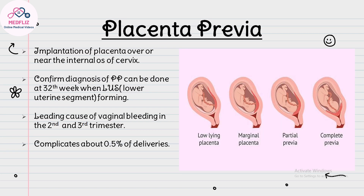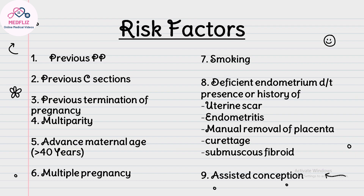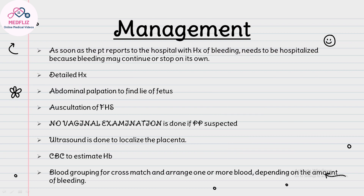Placenta previa is defined as implantation of the placenta over or near the internal os of the cervix. Confirmed diagnosis can be made at 32 weeks of gestation. It is a leading cause of vaginal bleeding in the second and third trimester, complicating about 0.5% of deliveries. Risk factors include previous placenta previa, previous cesarean sections, previous termination of pregnancy, multiparity, advanced maternal age over 40 years, multiple pregnancies, smoking, and deficient endometrium due to uterine scar, endometritis, manual removal of placenta, curettage, submucosal fibroid, or assisted conception.